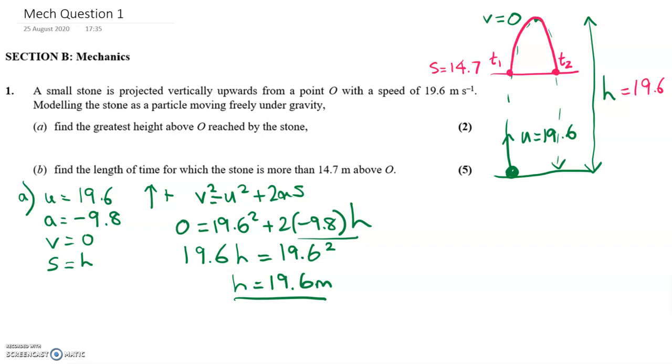So let's just write down again for part B all the information we know about the stone. We know that U is 19.6. We know that A is minus 9.8. We know that S is 14.7. And it's the times that we want, T1 and T2. So looking at these four things that we have, we know we've got to use S equals UT plus half AT squared.